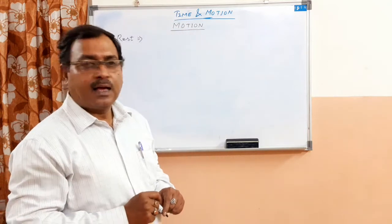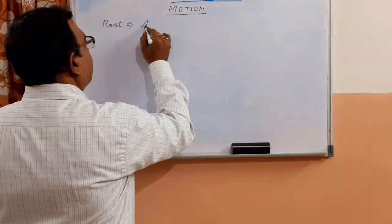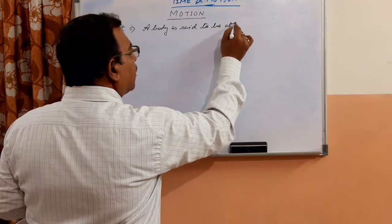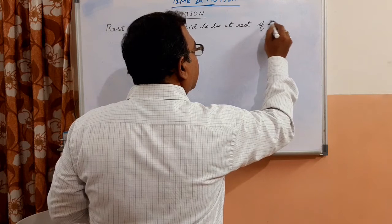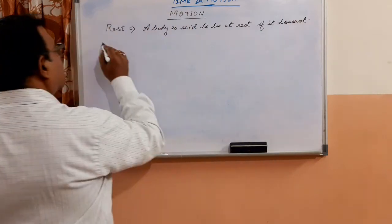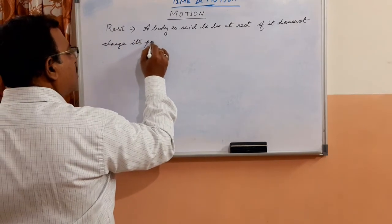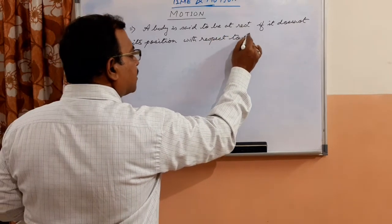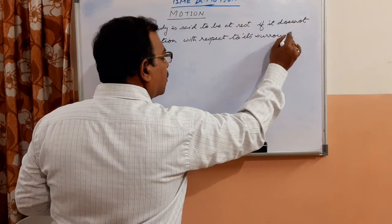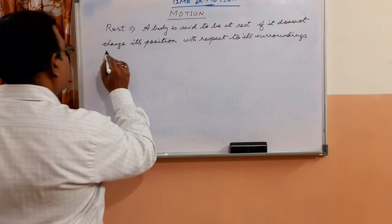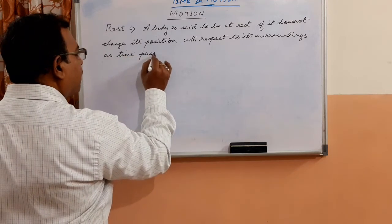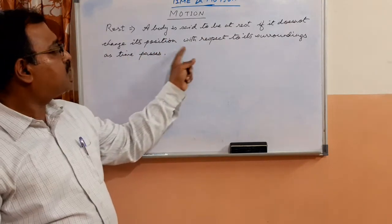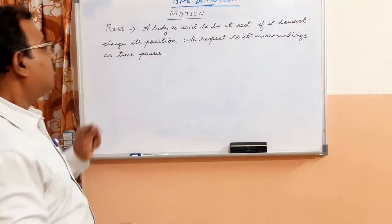So you can define rest as: a body is said to be at rest if it does not change its position with respect to its surroundings as time passes. Clear? So a body or an object is said to be at rest if it does not change its position with respect to its surroundings as time passes.